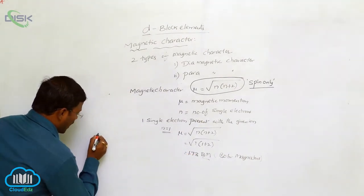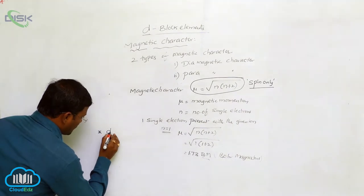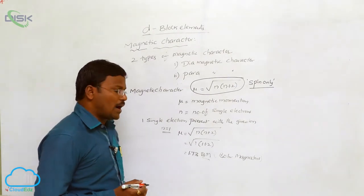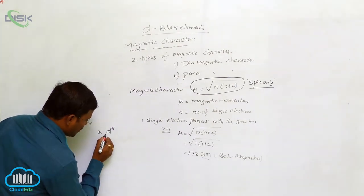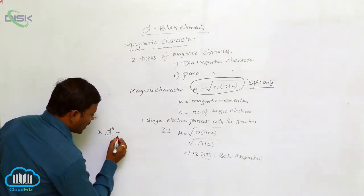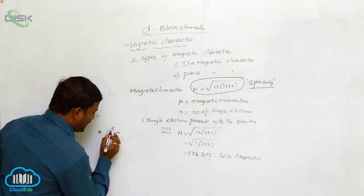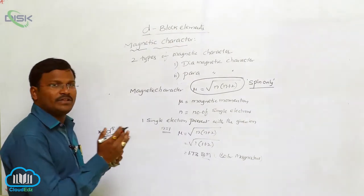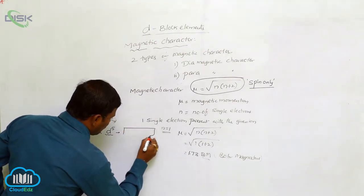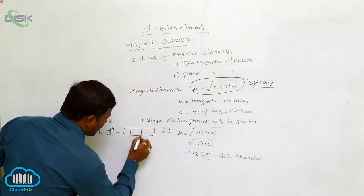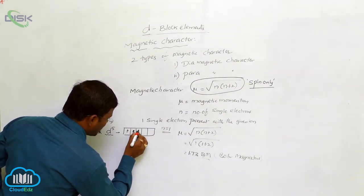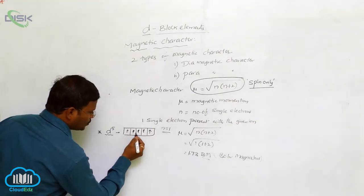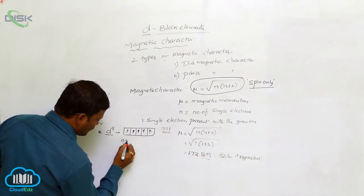For example, let us calculate the magnetic moment of an ion with a d⁵ configuration. A d⁵ configuration means the d-orbital is half filled with electrons — that is, the five sub-orbitals of the d-orbital each contain a single electron. In such a case, the number of unpaired electrons is 1, 2, 3, 4, 5 — so n equals 5.